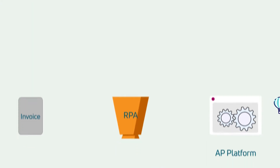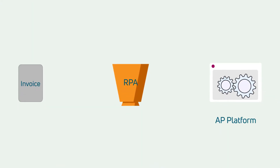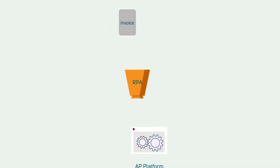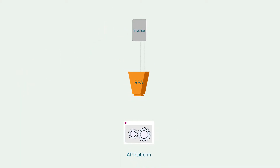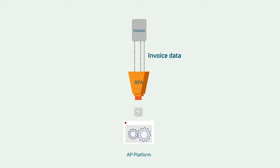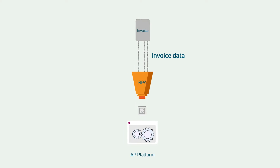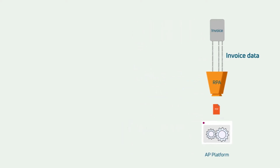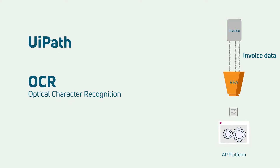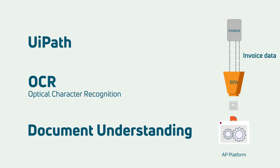The answer was to use UiPath RPA to automatically extract the data from the incoming invoices and push it into their AP platform. In a nutshell, the automation bot reads the line descriptions of the invoices to identify the business unit and cost center for each vendor, utilizing UiPath OCR and document understanding.